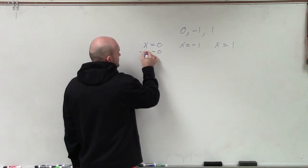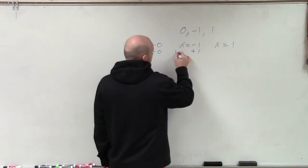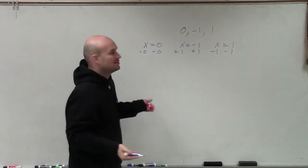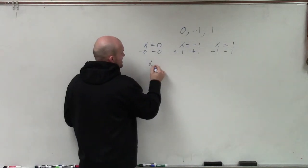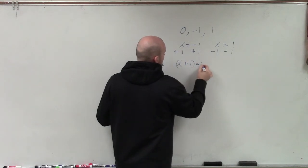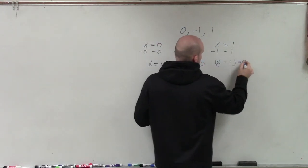So I'll subtract a 0 here, add 1, subtract 1. Now, obviously, x minus 0 is just still going to be x. So we can just say x still equals 0. But here I have x plus 1 equals 0, and here I have x minus 1 equals 0.